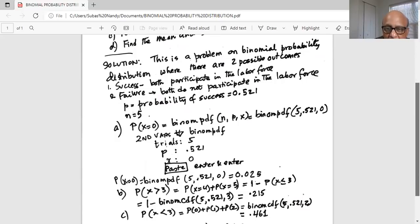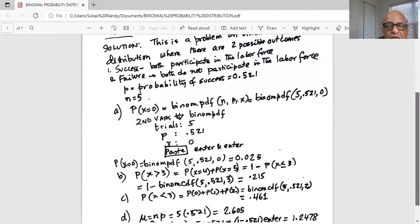And same, n is five. Okay. And number of trials is five. Probability of success is 0.521. And you want to add zero, one, two, and three. You want to stop at three because up to three is complement to four and five. And then enter and enter and you get answer as 0.215.